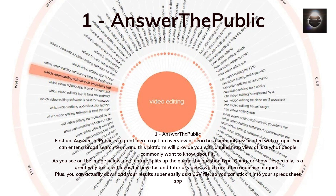First up, Answer the Public is a great tool to get an overview of searches commonly associated with a topic. You can enter a broad search term, and this platform will provide you with a mind map view of what people commonly want to know about it. One feature splits up the queries by question type — going for 'how' is a great way to collect ideas for how-tos and tutorial videos, which are often audience magnets. Plus, you can download your results as a CSV file to use in your spreadsheet app.